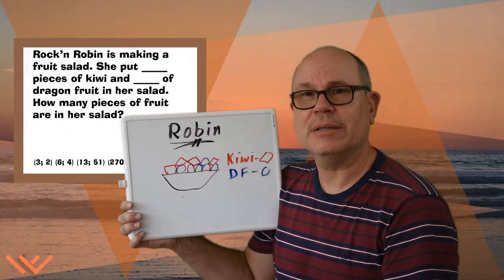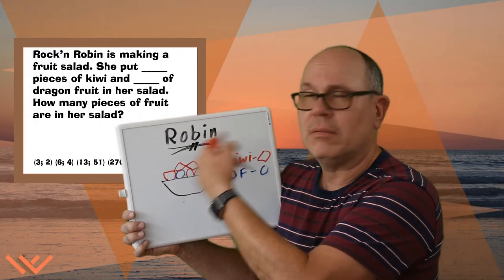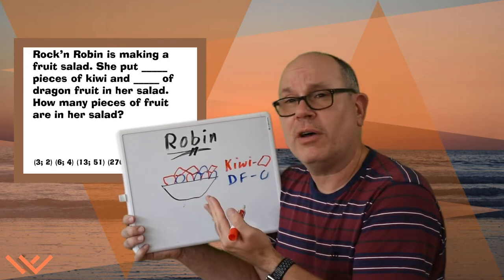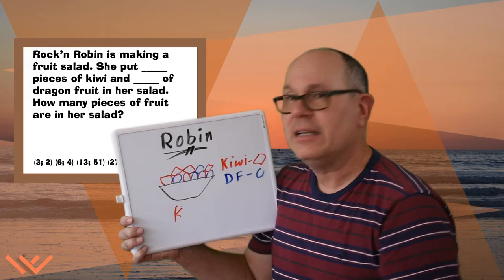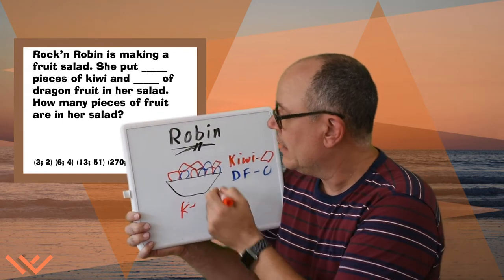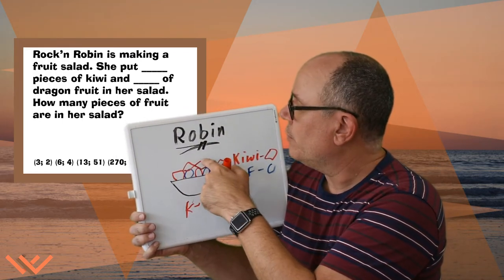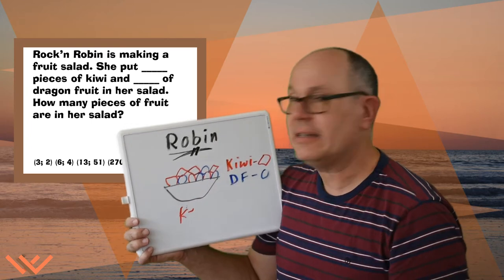How would you do it? Well, let's take a look. I drew all this stuff, I drew all the fruit, but let's keep a tally. So I have, do that for kiwi. So I have one, two, three, four, five, six pieces of kiwi.